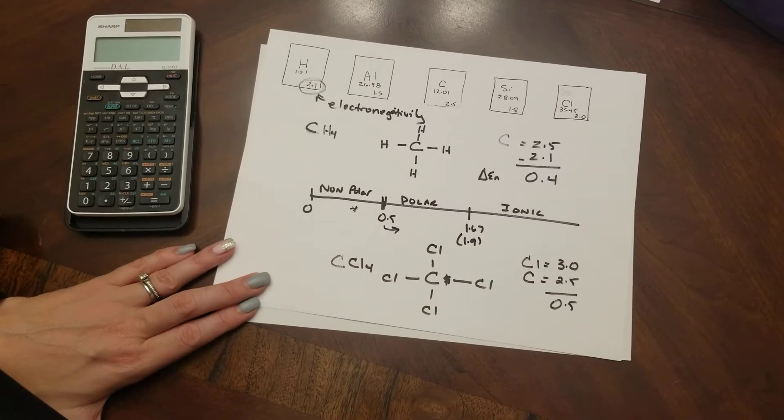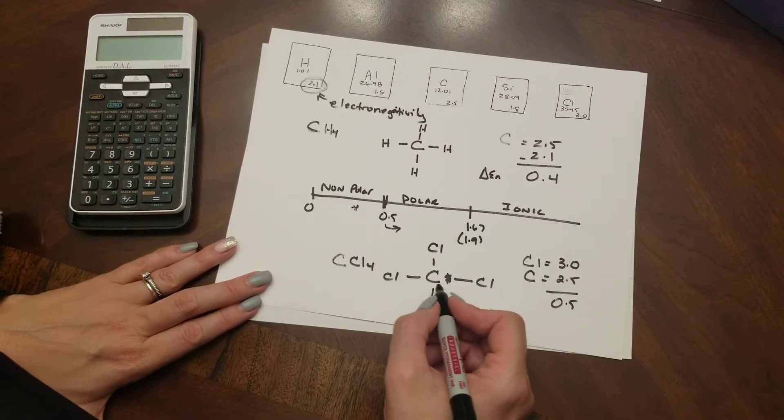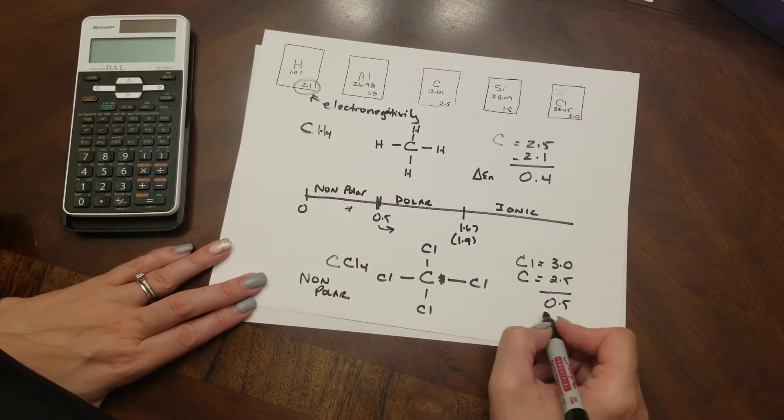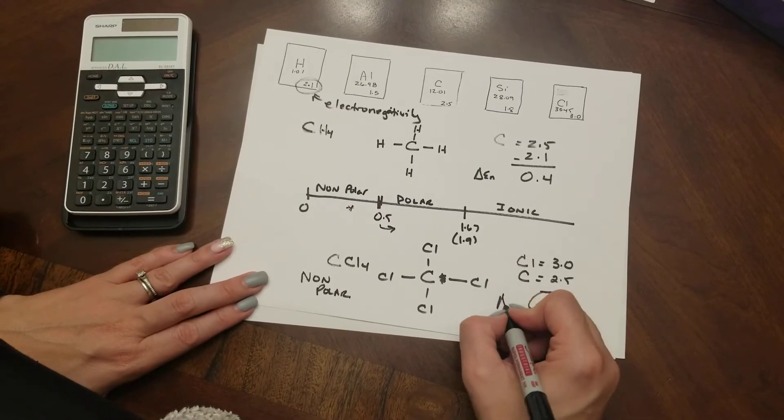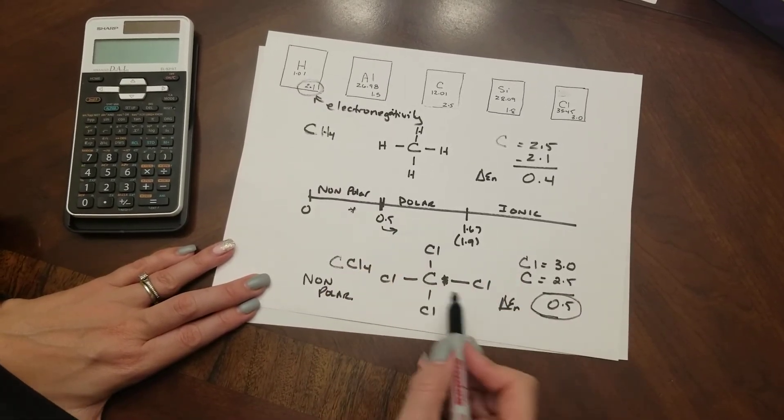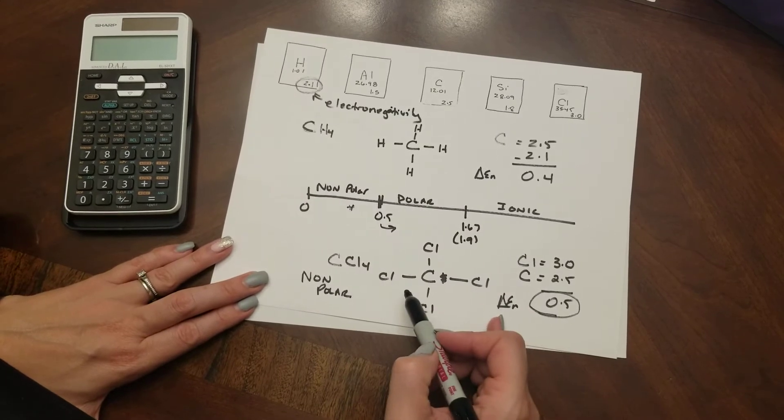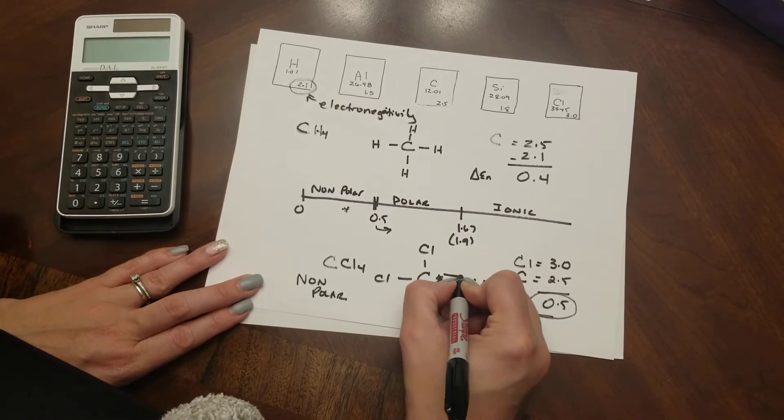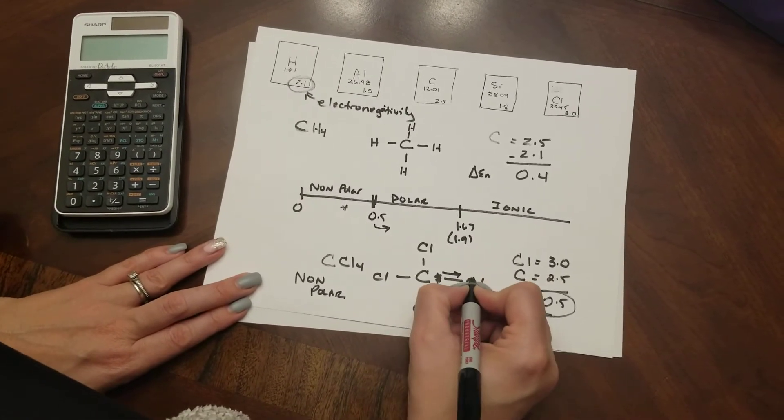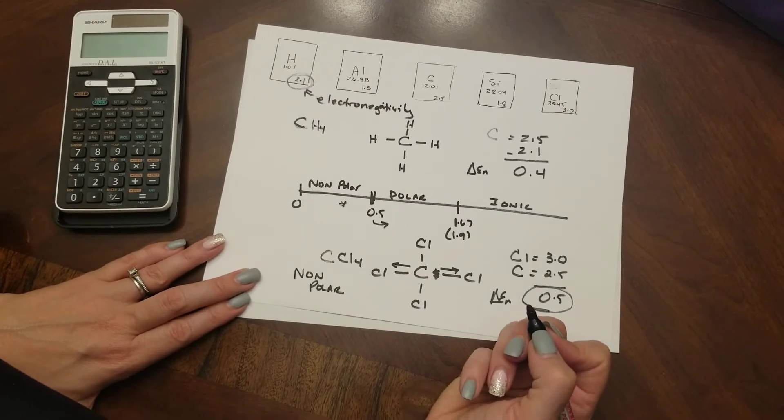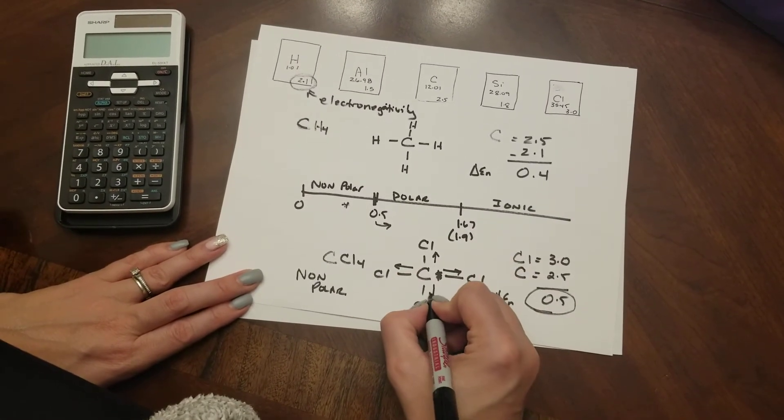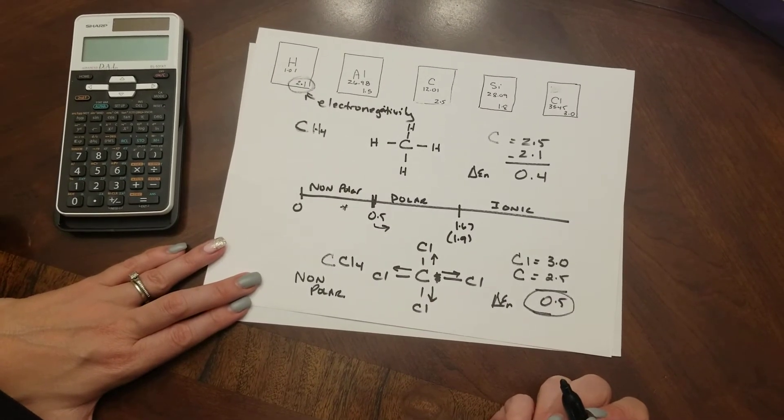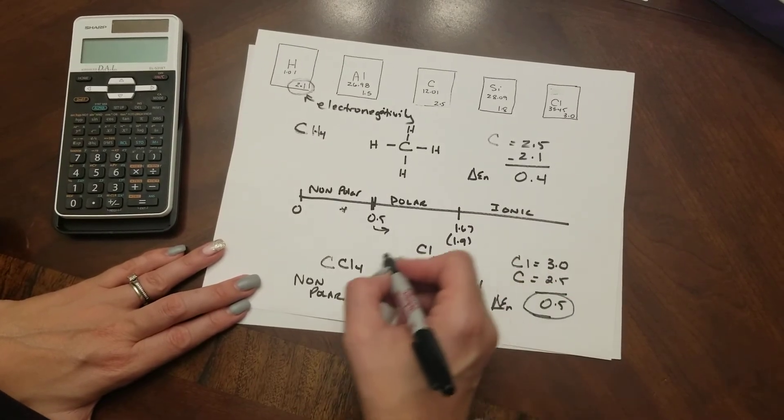This one actually falls into the range of polar but carbon tetrachloride is a non-polar molecule and the reason it's non-polar despite the fact that my change in electronegativity is above this tipping point is because of the shape. Each chlorine can pull on electrons stronger than the carbon does so this chlorine is pulling electrons a little bit this way but this chlorine is pulling them opposite just as this guy is pulling and this guy is pulling.